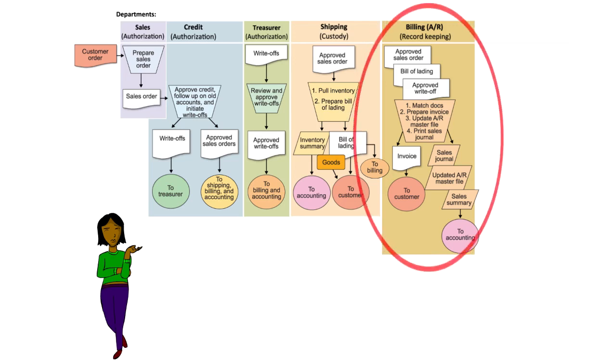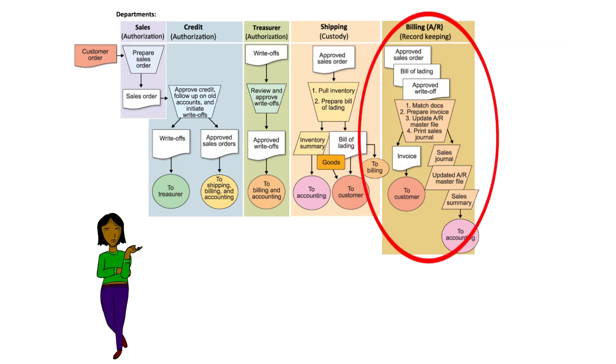Again, a number of good controls in place here. First off, the matching performed by Annalise to confirm the shipping documents and sales order. Second, the use of sequential numbering on the sales invoice. And finally, good segregation of duties between the record keeping, custody, and authority functions.